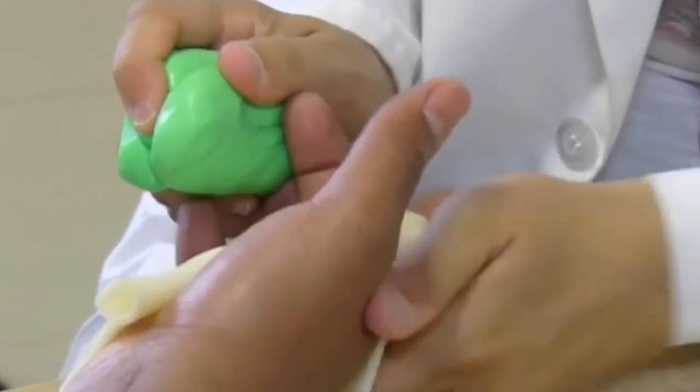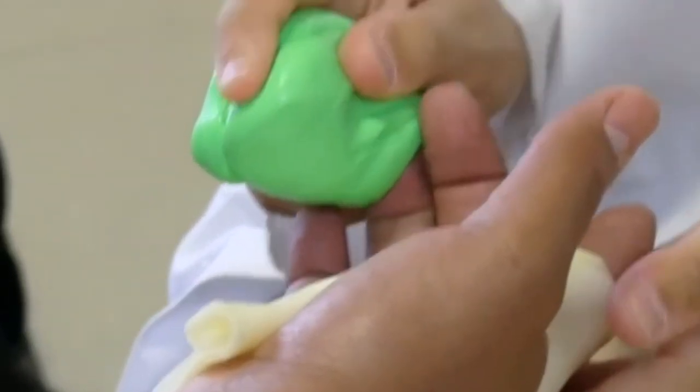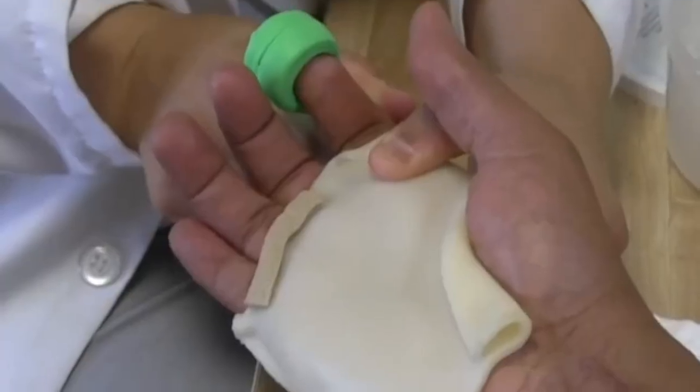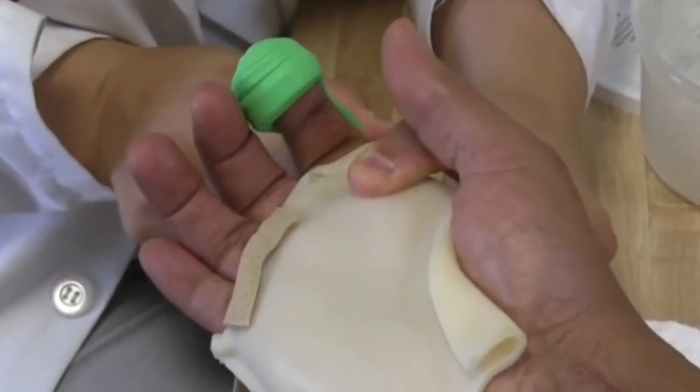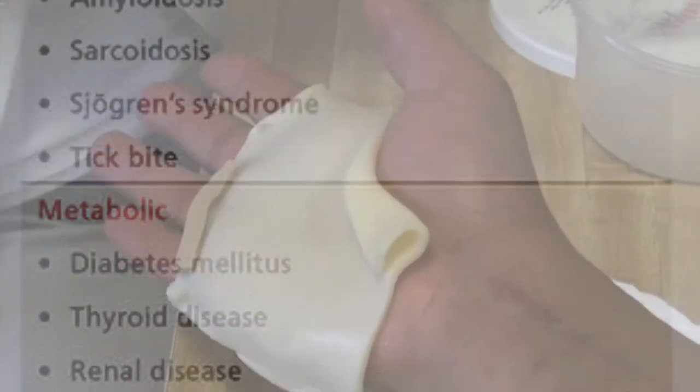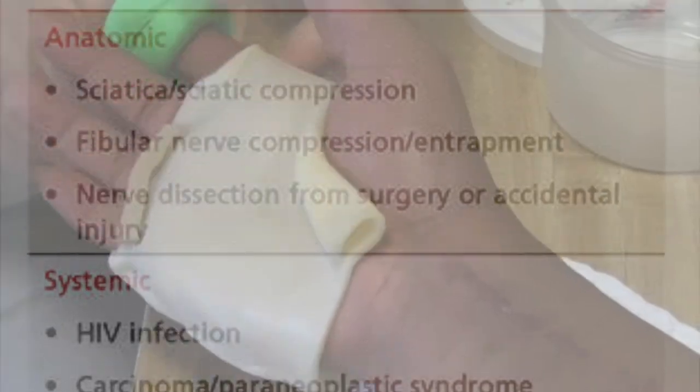Injuries to the upper extremity occasionally cause trauma to nerves, which can interfere with various functions of the arm and hand. Sometimes certain illnesses can affect nerves and cause symptoms in the upper extremity. These are called neuropathies.